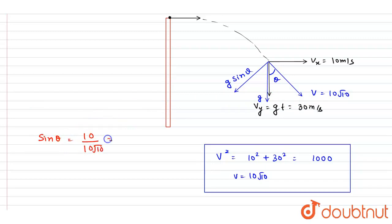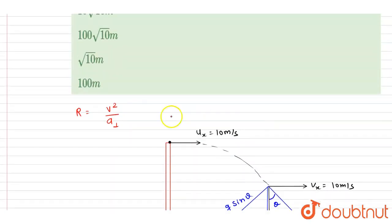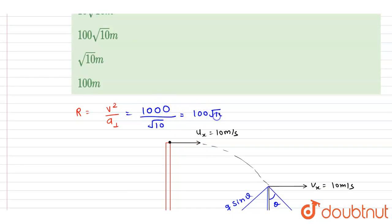So sinθ = 10 / (10√10) = 1/√10. Therefore, a_perpendicular = g·sinθ = 10 / √10 = √10. Now substituting into the radius of curvature formula: R = v² / a_perpendicular = 1000 / √10 = 100√10 meters.